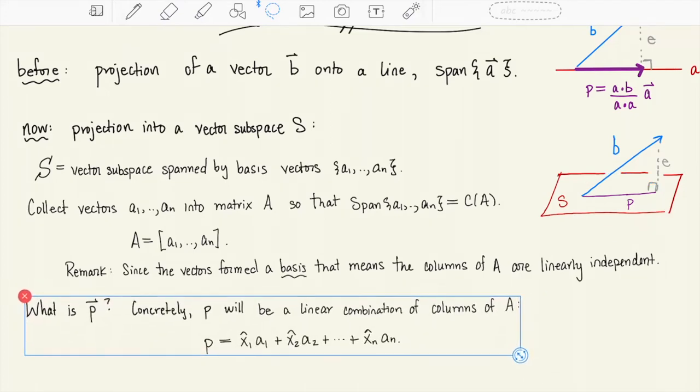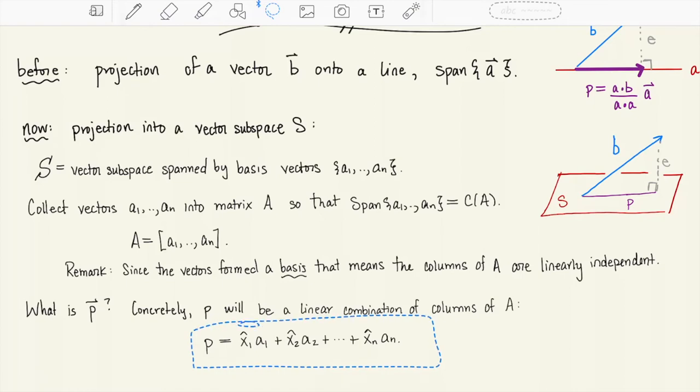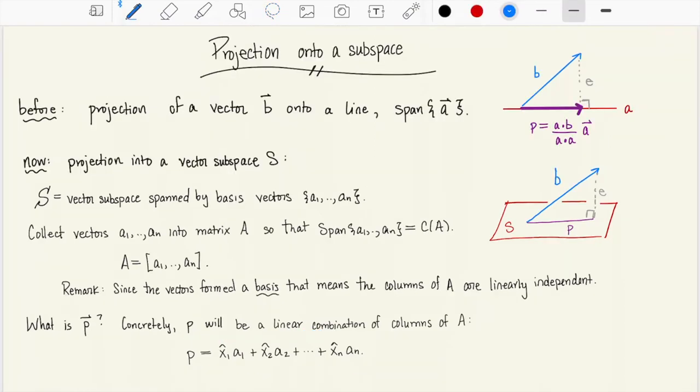p is the best approximation of b that lives in the space S. Concretely p is a vector and this vector will need to be living in S. It lives in the column space of the matrix A. So that means it is some sort of linear combination of the columns of A. We can write that projection vector p that we seek in the following form: scalar times first column of a, scalar times second column of a, and so on and so forth.